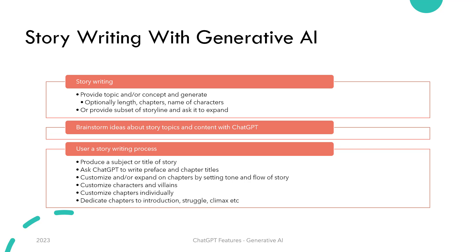You can generate full stories, articles, or other content by providing some topic or concepts, and ChatGPT will fill the rest in. Or provide a subset of a storyline and ask ChatGPT to expand it to a full article. You can develop character profiles or even ask for ideas about a story having characters with such and such attributes.